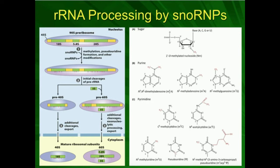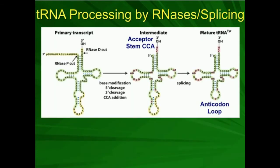For rRNA, the main thing we have to do is methylate and modify bases. Now we start talking about transfer RNA processing - this is probably the most complicated processing we're going to see. For tRNA modification, this one is going to involve splicing, but it's also going to involve a lot of other things. We're going to need to clip it in certain places and also modify the bases, which is something we don't see in mRNA.